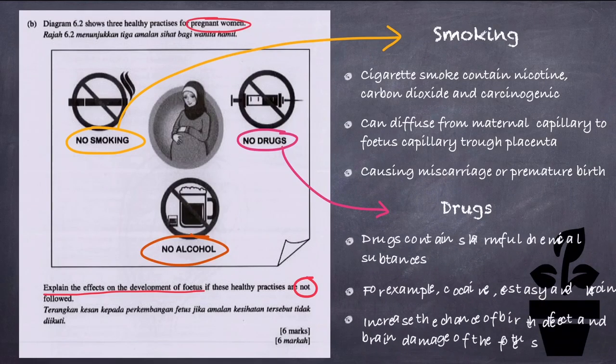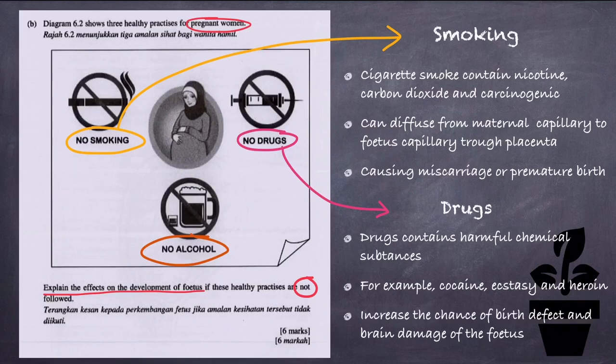Secondly, drugs. Drugs contain harmful chemical substances, for example cocaine, ecstasy, and heroin. These can increase the risk of defects and brain damage to the fetus.